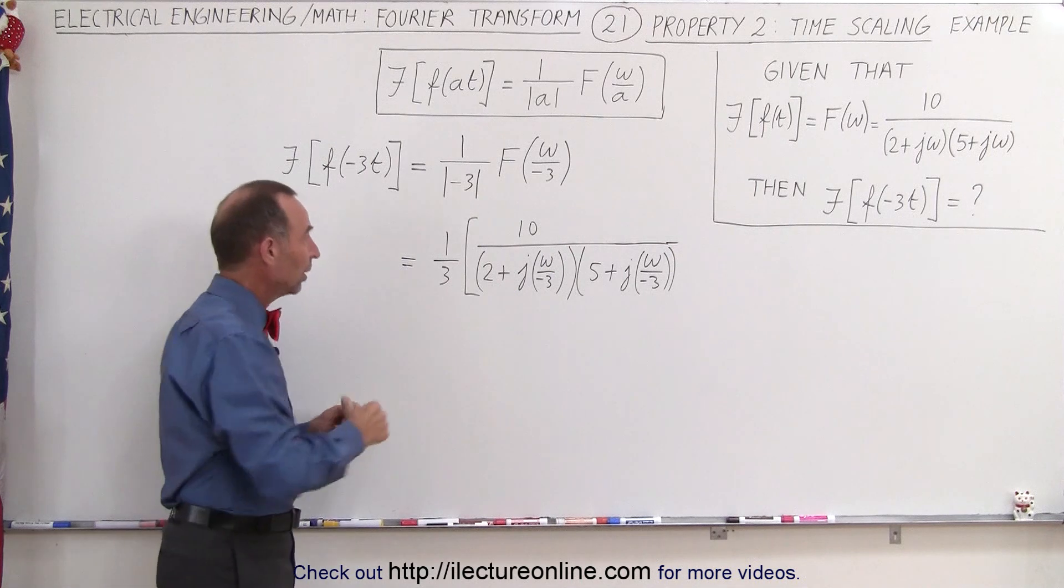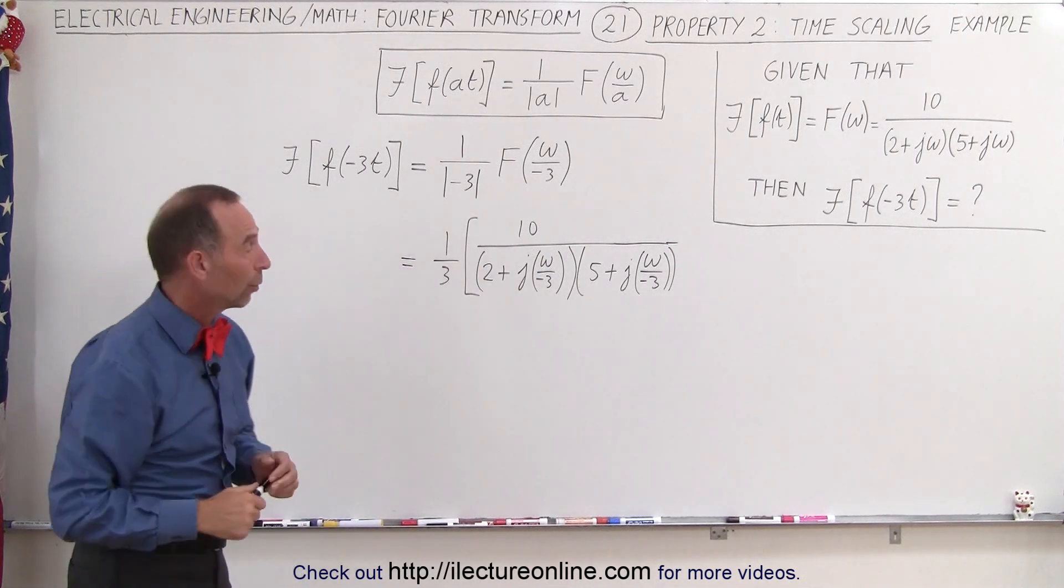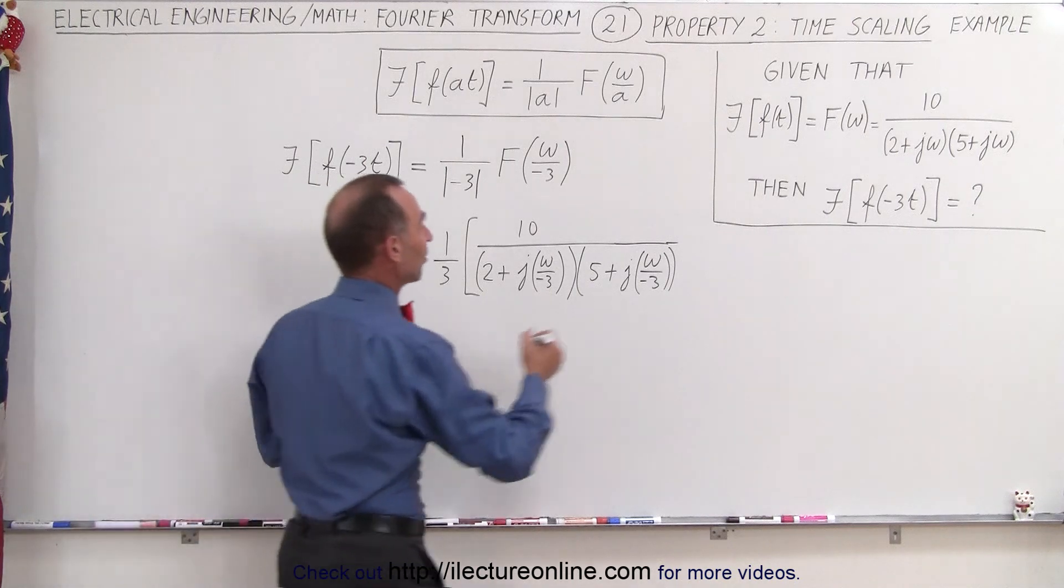So we simply put in a 1 over 3 in the front and replace every omega by omega over minus 3 and then we have to simplify that.